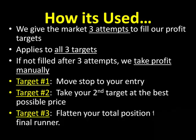We have three profit targets we use on a daily basis in the room. First profit target — once we see that filled, we move our stop to our point of entry. The second target, we take at the best possible price. The third target, we flatten our total position to lock in the final runner. So on the three strike rule, if we test but don't fill the first target one, two, three times, we then move our stop up to our point of entry to eliminate the risk.